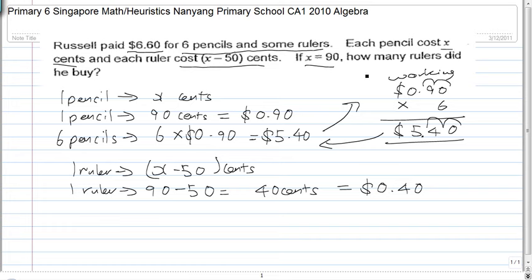How many rulers did he buy? We take $6.60, minus the cost of 6 pencils, and that equals $1.20. And we take $1.20 divided by 40 cents. So $1.20 divided by $0.40, that equals 3.